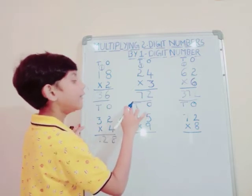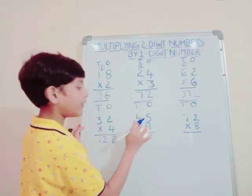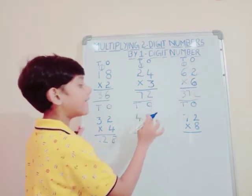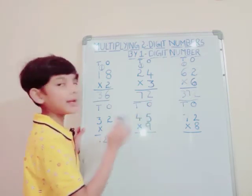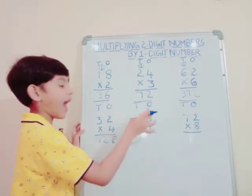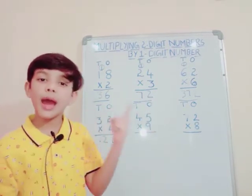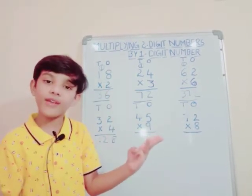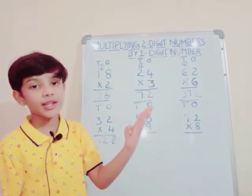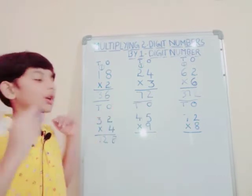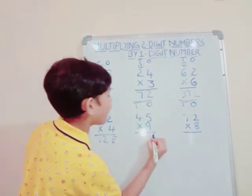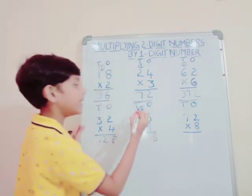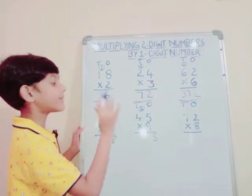Now our fifth sum: 45 into 9. First of all, we should multiply the 1's digit number by 9. That is: 9×1=9, 9×2=18, 9×3=27, 9×4=36, 9×5=45. We should write 5 and carry up 4. Don't forget to carry up 4 in the 10's place.